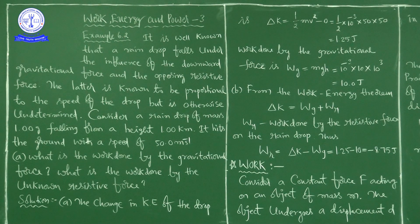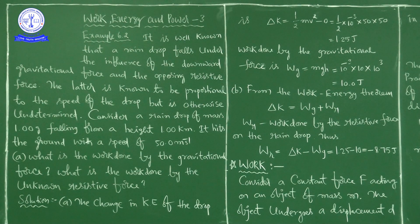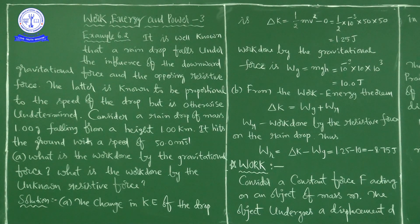We used the mass of the raindrop and the height of fall to calculate the work done by the gravitational force. Then we calculated the work done by the unknown resistive force using the work-energy theorem. Work is a form of energy, so the change in kinetic energy equals the total work done. Wr = ΔK − Wg = −8.75 joules.